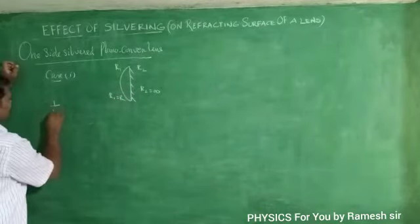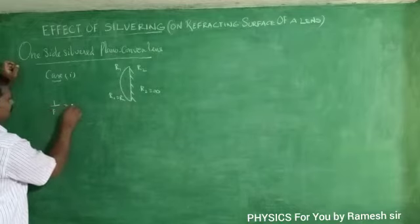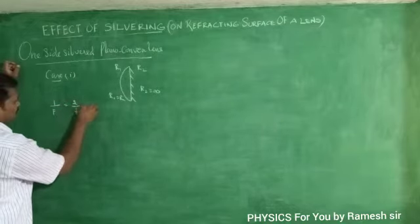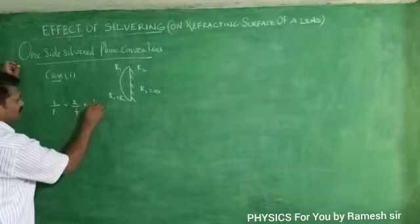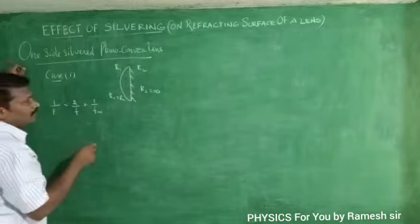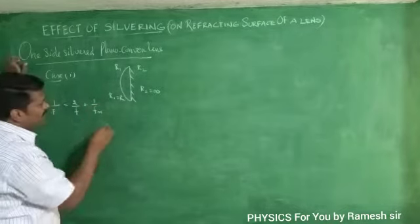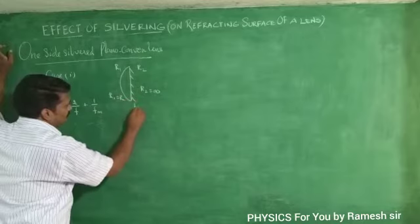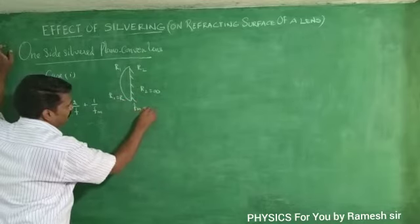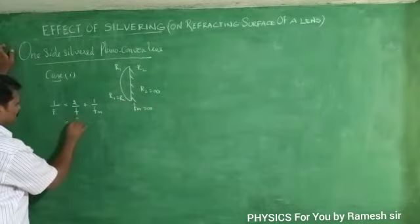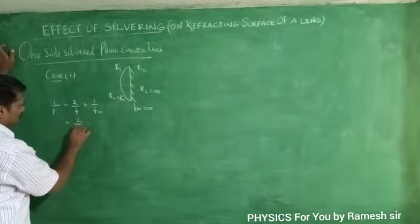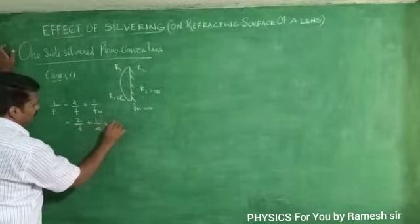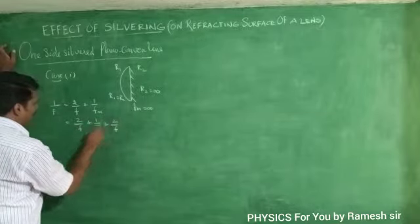The effective focal length formula is: 1/F = 2/f + 1/fm. For a plane mirror, fm is equal to infinity. So that gives us 2/f + 1/infinity, which equals 2/f.